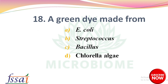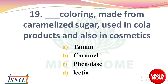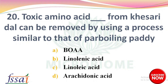Next question: a green dye made from — options: E. coli, Streptococcus, Bacillus, Chlorella algae. The right answer is option D, Chlorella algae. Next, dash coloring made from caramelized sugar used in cola products and also in cosmetics — options: tannin, caramel, phenylase, lectin. The right answer is option B, caramel.